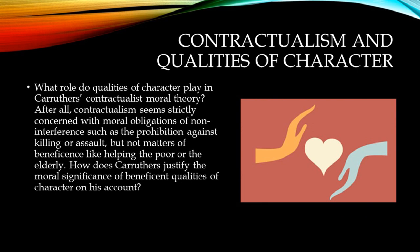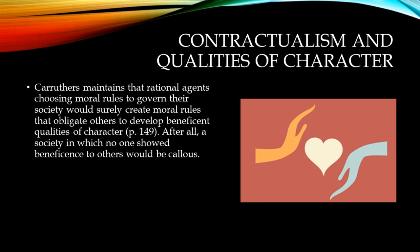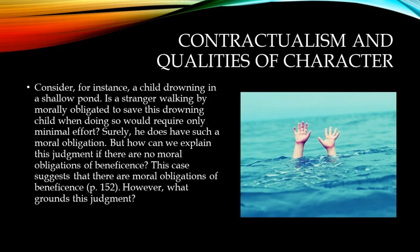What role do qualities of character play in Carruthers' contractualist moral theory? After all, contractualism seems strictly concerned with moral obligations of non-interference, such as the prohibition against killing or assault, but not matters of beneficence like helping the poor or the elderly. How does Carruthers justify the moral significance of beneficent qualities of character? Carruthers maintains that rational agents choosing moral rules to govern their society would surely create moral rules that obligate others to develop beneficent qualities of character. After all, a society in which no one showed beneficence to others would be callous. Consider a child drowning in a shallow pond — is a stranger walking by morally obligated to save this drowning child when doing so would require only minimal effort? Surely he does have such a moral obligation. But how can we explain this judgment if there are no moral obligations of beneficence?